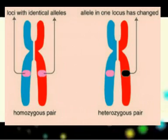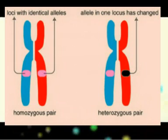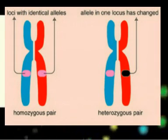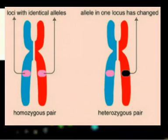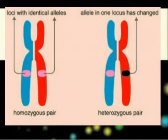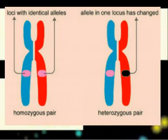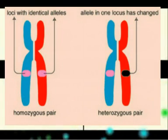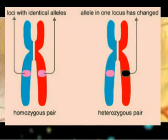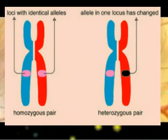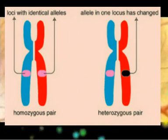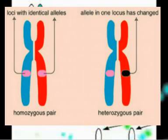A diploid organism with two sets of identical alleles is termed homozygous; an organism with two different alleles is heterozygous. Several different forms of an allele can exist within a population.